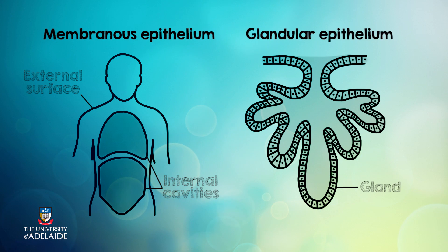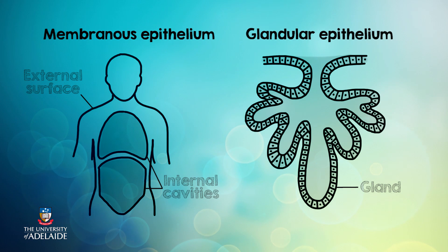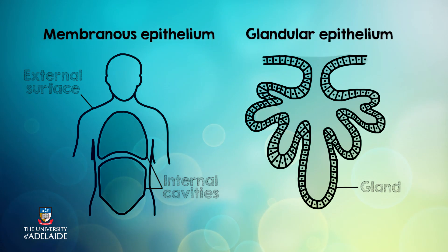Glandular epithelium, however, is specialised epithelial tissue that produces and secretes substances such as sweat, stomach acid, mucus and hormones.